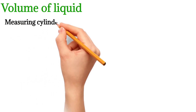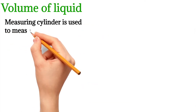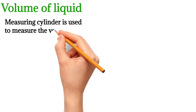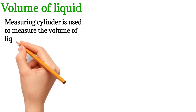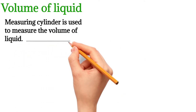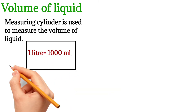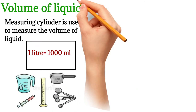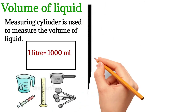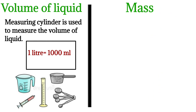We measure the volume of liquid in liters or milliliters. One liter is equal to 1000 milliliters. You can see the pictures of equipment that help to measure the volume of liquid.